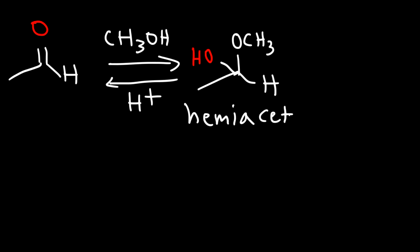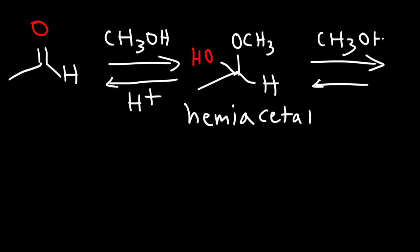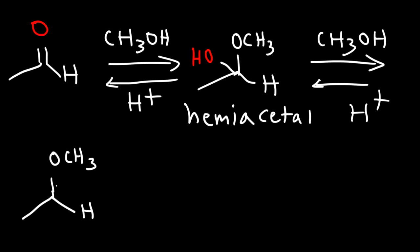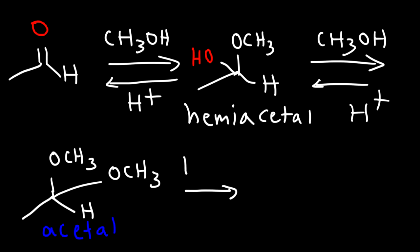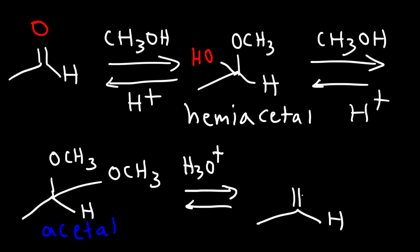It doesn't have to stop there. The hemiacetal can react with another methanol molecule under acidic conditions, and so we're going to get two OR groups. This product is called an acetal. Now if we take the acetal and react with H3O+ under acidic conditions, we can go back to the aldehyde compound. This whole process is reversible.